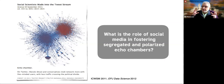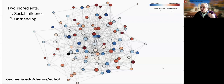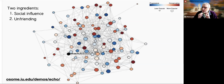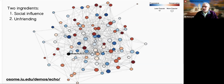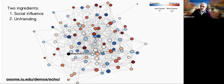To understand the role of social media platforms in creating dense communities where information spreads virally, we used an agent-based model with two key ingredients: social influence through a bounded confidence model — if you're exposed to an opinion sufficiently close to yours, there's a small chance your opinion shifts slightly toward it — and network rewiring through unfriending, where if you strongly disagree with something posted by someone, you unfollow them with some small probability and replace that edge with a random connection.